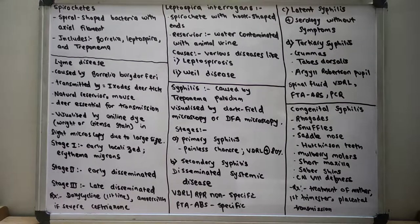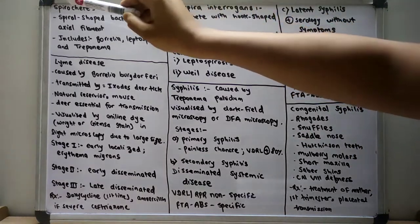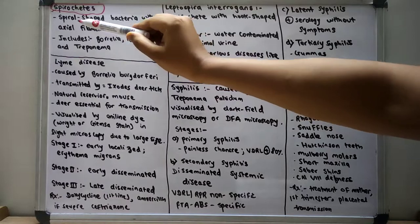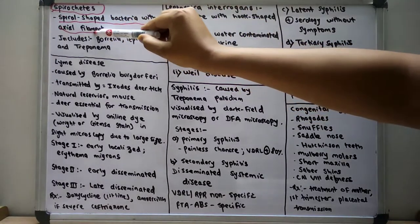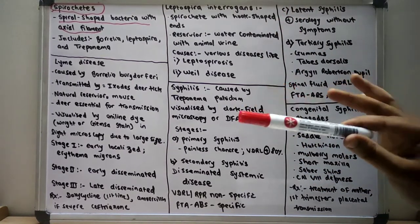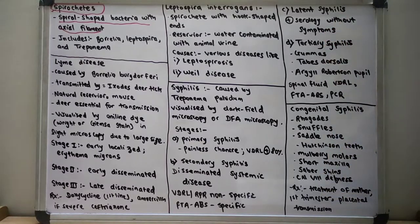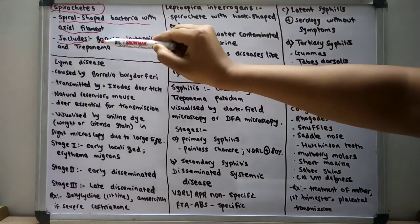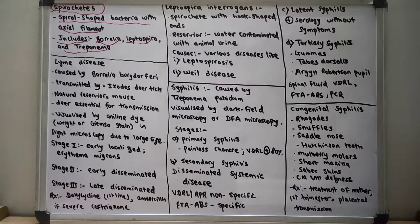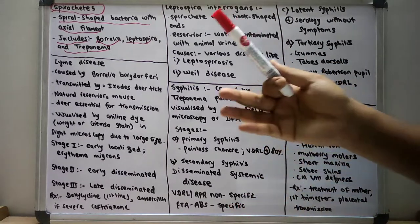Hello everyone, today we are going to read about one of the very important topics in clinical biochemistry. We are going to read about the bacteria spirochetes. Spirochetes are bacteria that are spiral shaped with an axial filament. The various spirochetes include Borrelia, Leptospira and Treponema. In this video we are going to talk in detail about the diseases caused by each of these organisms.